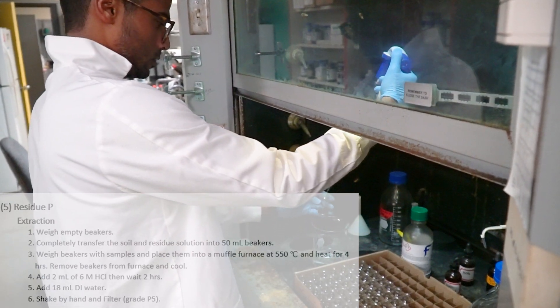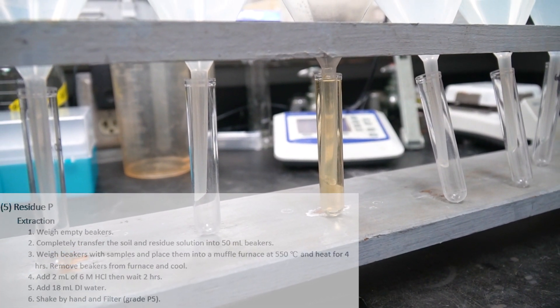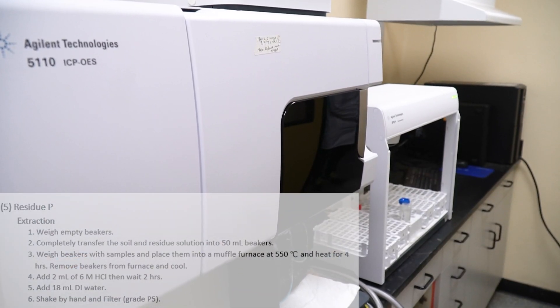Then we have to shake the samples and filter them out. The supernatant will be used to analyze residue P using ICP-OES.